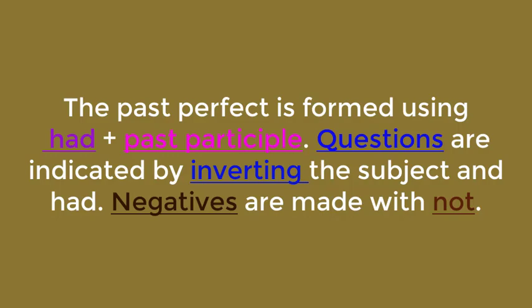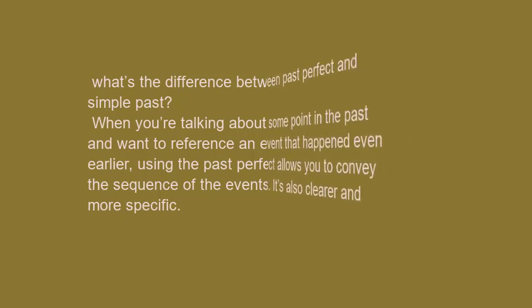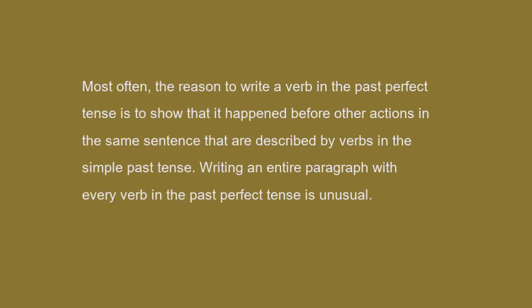Past perfect is formed using had plus past participle. Questions are indicated by inverting the subject and had. Negatives are made with not. What's the difference between past perfect and simple past? When we are talking about some point in the past and want to reference an event that happened even earlier, using the past perfect allows you to convey the sequence of events. It is also clearer and more specific.